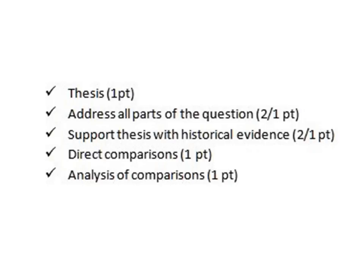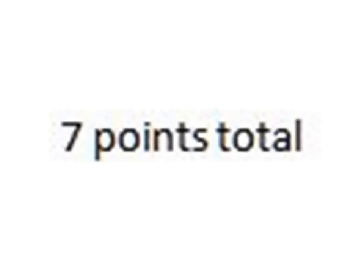Let's do a quick review of the rubric. The thesis is worth one point, addressing all parts of the question, which means you talk about both places under comparison. Similarities and differences account for two points, or one point if you don't get them all. Supporting your thesis with historical evidence is worth two points, or one point if you can't do it fully. Making direct comparisons is worth one point, and analysis of those comparisons is worth another one point. This leaves us with seven points total. I'm not going to get into the expanded core — that just means you did everything extremely well, so good for you if you get into the nine-point range.